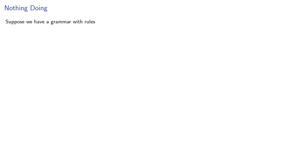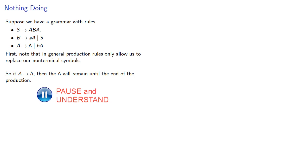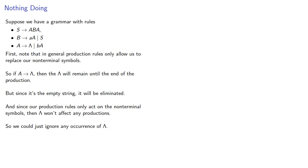Let's consider a grammar with rules. First note that in general, production rules only allow us to replace non-terminal symbols. Once you've introduced a terminal symbol into a string, it can't be eliminated. So if A produces lambda, then lambda will remain until the end of the production. But since it's the empty string, it will be eliminated. And since our production rules only act on the non-terminal symbols, lambda won't affect any productions. So we could just ignore any occurrence of lambda.